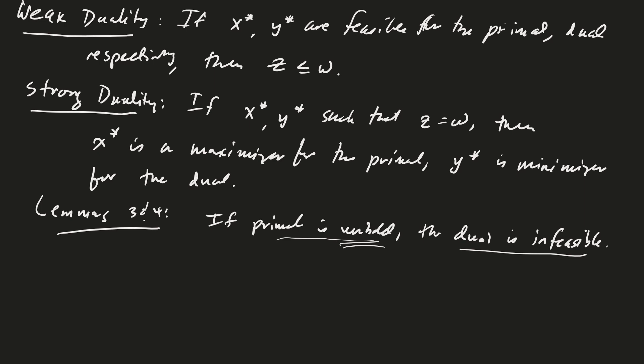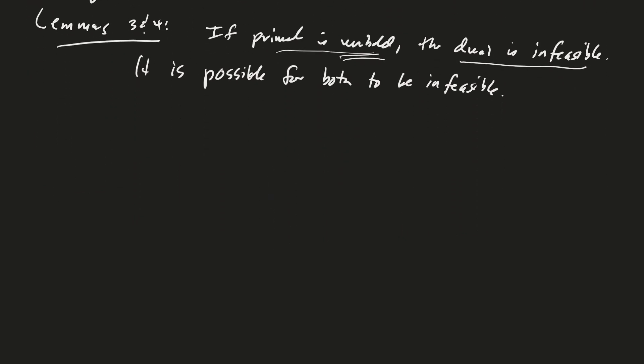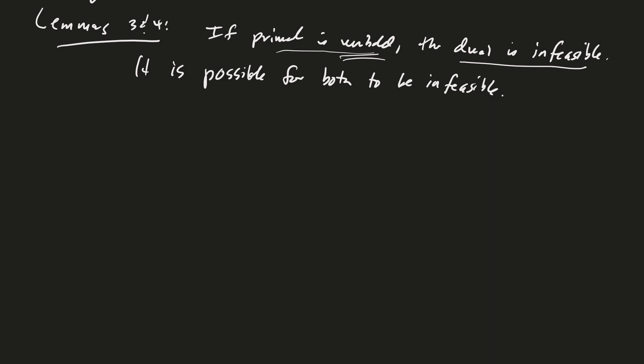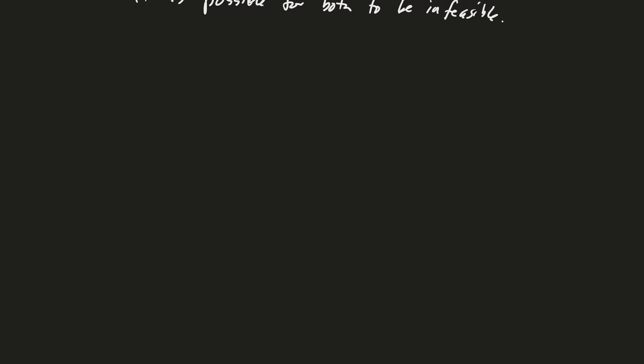See if you can write that up as a reasonable argument now. And similarly, by the way, since the dual of the dual is the primal, this works the other way as well. If the dual is unbounded, then the primal is infeasible, and that's lemmas three and four. We should say it is possible for both to be infeasible. Lemmas three and four are actually homework problems. Now we're on to the main feature of 6.7, and that is the dual theorem.